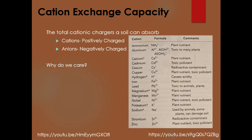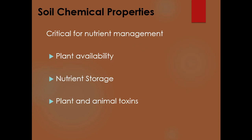Why do we care about cations and anions? Many of our cations are plant nutrients. Running down the list: calcium, copper, ammonium for nitrogen, potassium, magnesium, manganese, nickel — all essential elements. Other cations listed can become toxic to animals and plants, and soil acidity can alter toxin availability. So soil chemical properties are critical for nutrient management: focus on plant availability based on pH, nutrient storage based on cation exchange capacity, and plant and animal toxins.